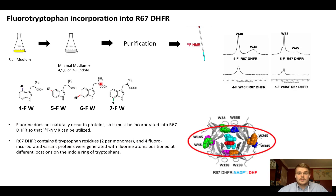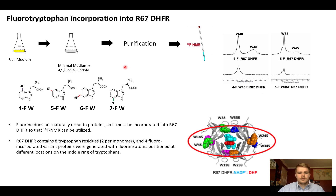To use NMR for this purpose, we had to incorporate fluorine into our protein. We did this by adding fluorine to the amino acid tryptophan, using four different variants: 4F, 5F, 6F, and 7F. This is simply adding fluorine at different positions on the indole ring of tryptophan.